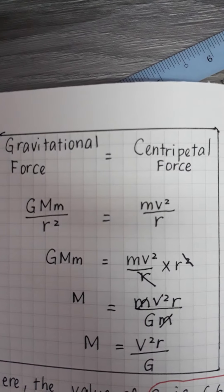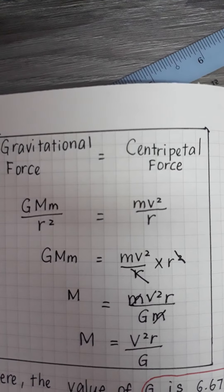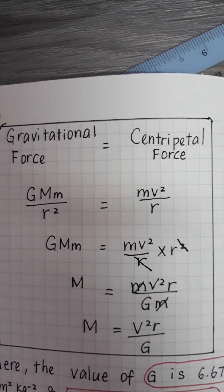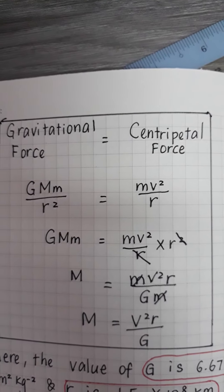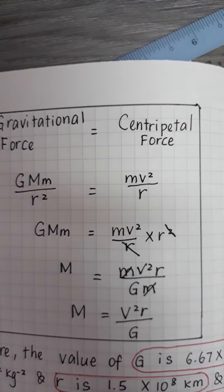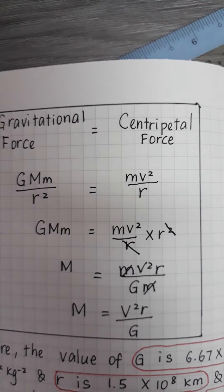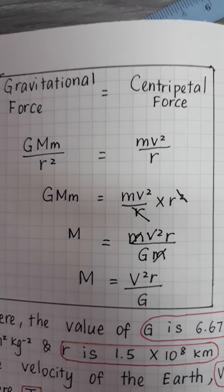Gravitational force, we know that GMm over r square equals the centripetal force mv square over r. Since we want to look for the mass of the sun, which is the capital letter M, the other variables have to move to the other side.